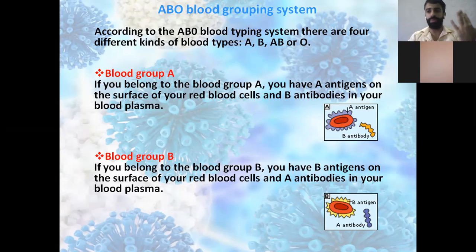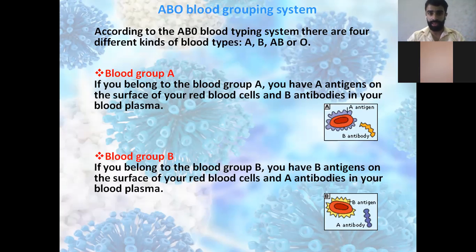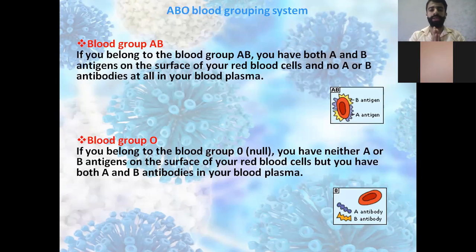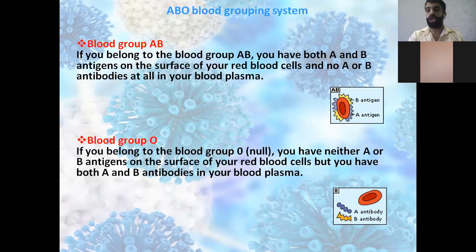Blood group A has antigen A and antibody B. Blood group B has antigen B and antibody A. Blood group AB has both antigen A and B, with no antibodies in the plasma — no anti-A, no anti-B. Blood group O is the null group — it has no antigens, neither A nor B, but it has both antibodies A and B.